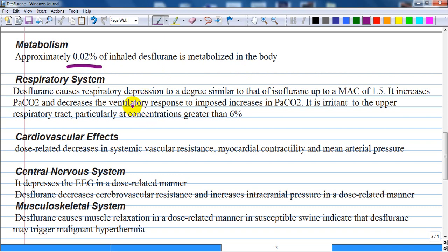Respiratory system: desflurane causes respiratory depression to a degree similar to that of isoflurane, up to a MAC of 1.5. It increases partial pressure of carbon dioxide and decreases ventilatory response to increases in PaCO2. It is irritant to the upper respiratory tract, particularly at concentrations greater than 6%. It is therefore not recommended for gaseous induction.